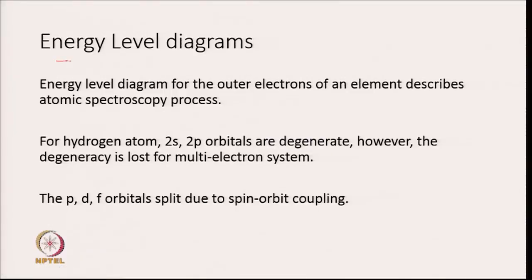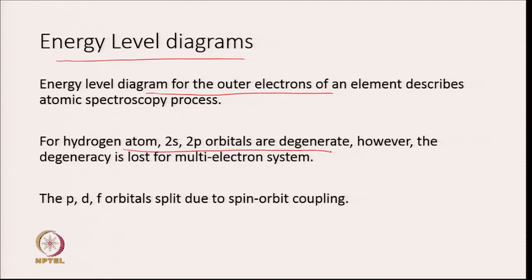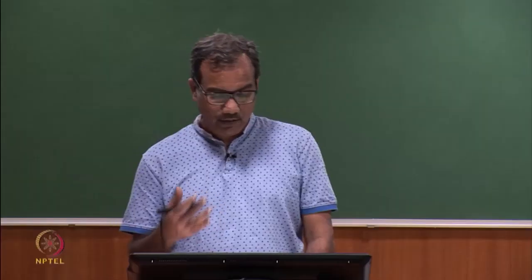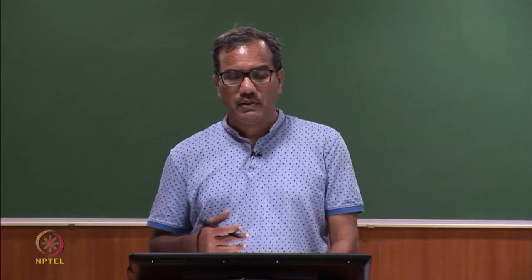The basis of atomic spectroscopy is the energy level diagrams of different atoms. The energy level diagram for the outer electron of an element describes the atomic spectroscopy process. So outer electrons are very important. For example, for alkali metals, the outer electrons are in the S orbital, and so the one electron in the outermost S orbital describes its atomic spectroscopy process. For hydrogen atom, 2S and 2P orbitals are degenerate, but the degeneracy is lost for a multi-electron system. P, D, F orbitals are split due to spin-orbit coupling. These are a few things we already discussed in the previous lecture. Now let us go back and discuss the spectra of alkali metals.